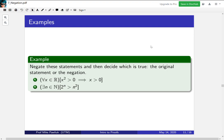So let's work with these two examples. I want you to negate these statements and then decide which is true, the original statement or the negation. The first statement is for all x in R, all real x, if x squared is greater than zero then x is greater than zero. The second statement is there is a natural number n such that 2 to the n is greater than n squared.